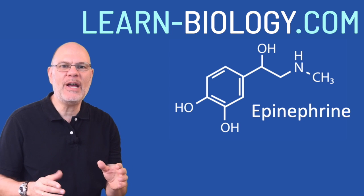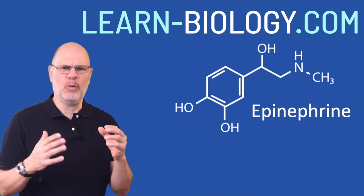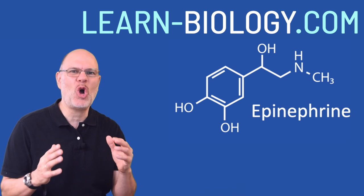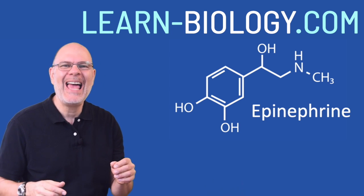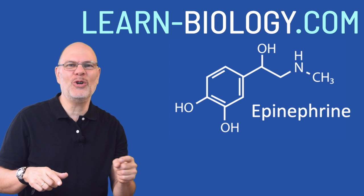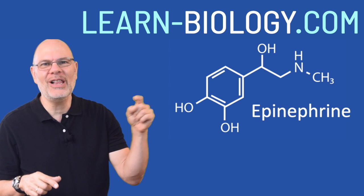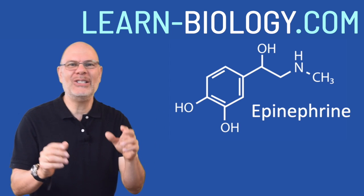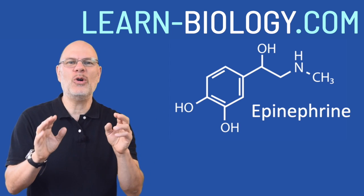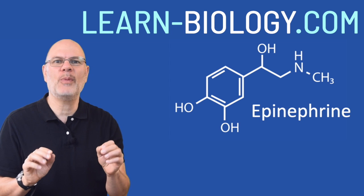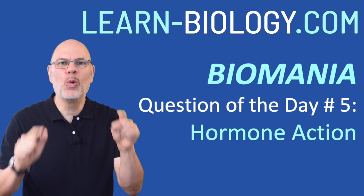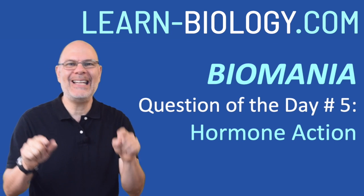This hormone, epinephrine, can make your pupils dilate, it can make your heart race, and it can get your liver to convert its stores of glycogen into glucose as part of the fight or flight response. How does it work? We're going to look at that today.